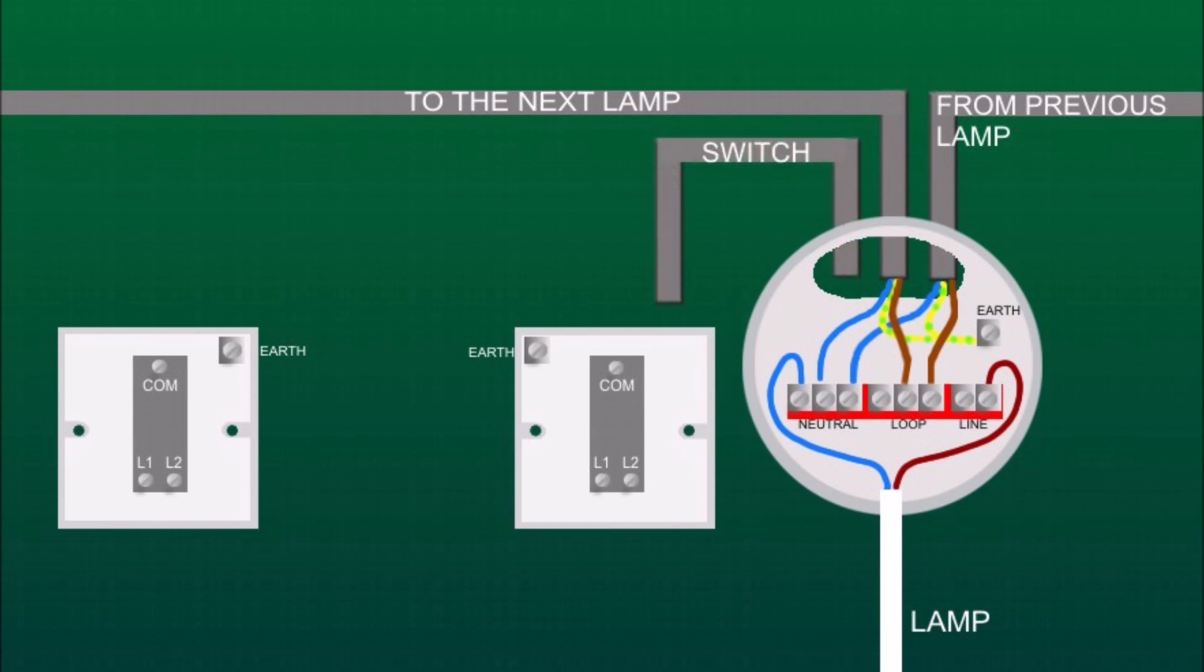Now the first switch is also wired to the ceiling rose with twin and earth cable. At the ceiling rose, earth wire to the earth terminal, live wire to the loop, and blue wire to line terminal.